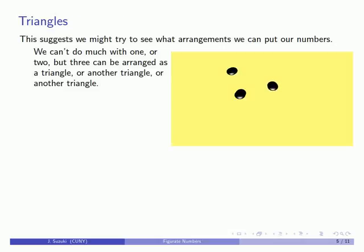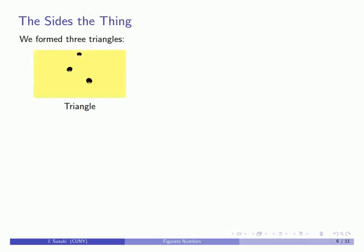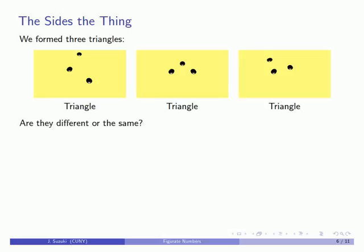And now, here's an important thing. I've arranged three triangles, this one, this one, and this one. And the question is, are they different, or are they the same? And the first triangle has sides of two, two, and two.